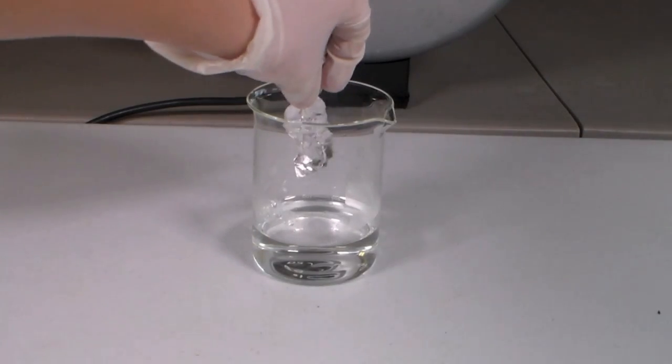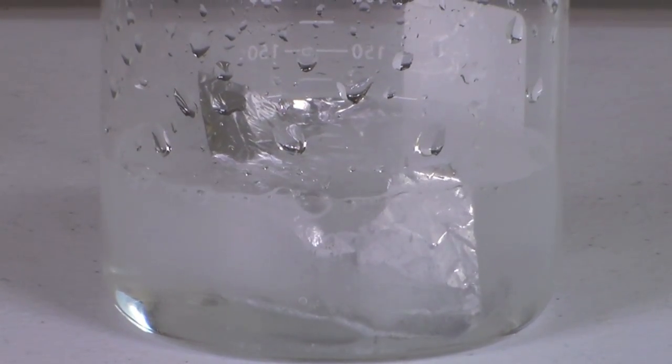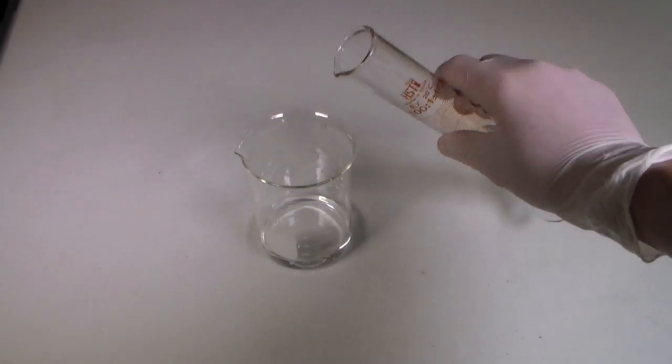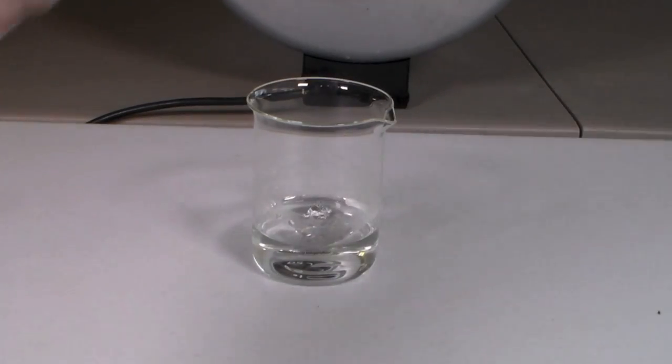We first need to dissolve the Aluminum in hydrochloric acid to make a solution of Aluminum Chloride. So, dilute the acid by adding the same volume of water and slowly add the Aluminum Foil.